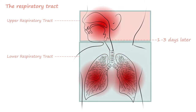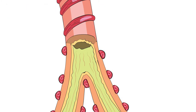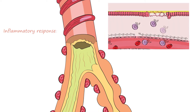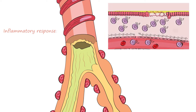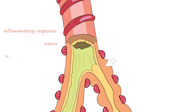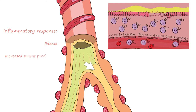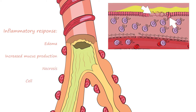The virus spreads to the bronchioles, where small bronchiolar epithelium lines the small airways. If a lower respiratory tract infection occurs, the virus causes an inflammatory response. Immune cells infiltrate the area, causing edema, increased mucus production from goblet cells, and eventually necrosis and regeneration of these epithelial cells.